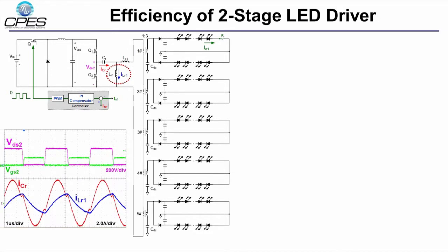Here are the waveforms of CLL. The blue curve is the current flowing through LR1, and the purple one is the drain-source voltage of Q2. We can see that ZVS of Q2 is achieved.